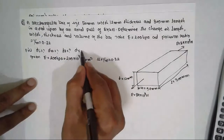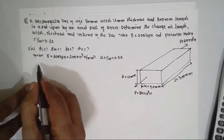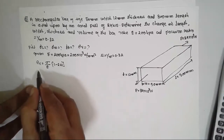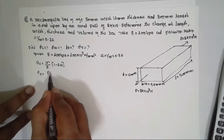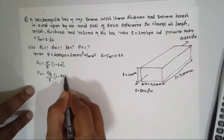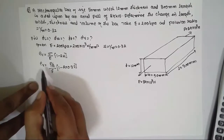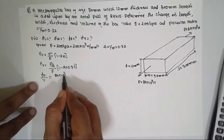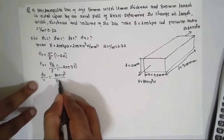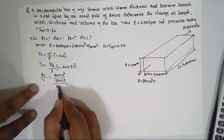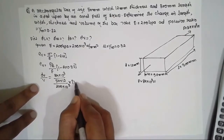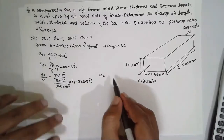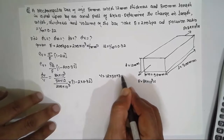First, we find the change in volume. Volumetric strain Ev = (σ/E)(1 − 2μ) = (P/A)/E × (1 − 2 × 0.32). Ev = ΔV/V. In place of P: 84 × 10³; area for tension acting along length = 50 × 12. E = 200 × 10³ and (1 − 2 × 0.32).